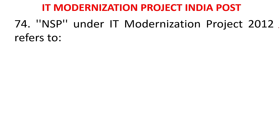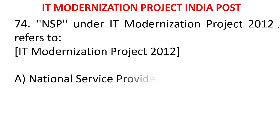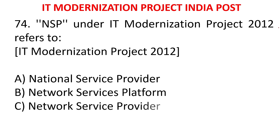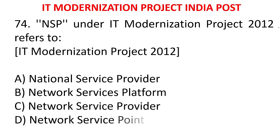MCQ 71: NSP under IT modernization project 2012 refers to - A) National Server Provider, B) National Service Provider, C) Network Services Platform, D) Network Service Provider, E) Network Service Point. The answer is Network Service Provider. We have two NSPs - NSP1 is BSNL and NSP2 is CFFE. MCQ 72: NOFN under IT modernization project 2012 refers to - A) National Operations of Fiber Network, B) Natural Optical Fiber Network, C) National Optical Fiber Network, D) National Organization of Fiber Network. The answer is National Optical Fiber Network.